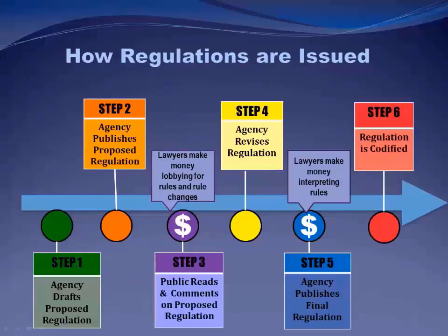Here in a nutshell is how a regulation goes from being an idea to being a final regulation codified in the Code of Federal Regulations. They usually come into being after some initiating event — a voluntary act by the agency acting on its own priorities, reacting to new scientific data or technology, a series of unfortunate events like traffic accidents or adverse drug reactions, or rulemaking mandated by statute. For example, when Congress passed the Affordable Care Act, a slew of regulations had to be issued by various federal agencies.